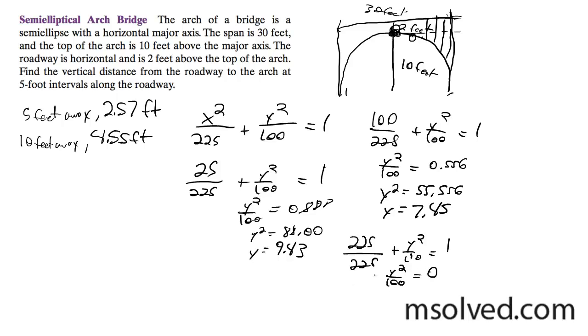Y squared equals 0. So that just means you'd be right here for y, and this whole span here is 12 feet. So for 15 feet away, you get the full effect of the ellipse, which is 12 feet.